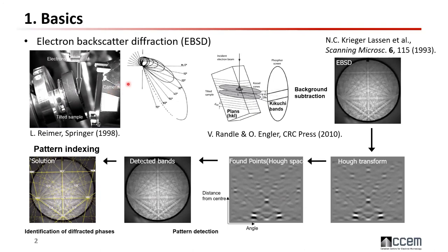The reason we tilt the sample to 70 degrees is because we want to yield a high number of backscattered electrons. Regarding the physics of EBSD: your electron beam arrives on your sample surface and is initially scattered in all directions, but only those electrons matching the Bragg diffraction condition are scattered coherently onto your EBSD camera to form the Kikuchi bands. The bands originate from the lattice planes, and all intersecting planes form this EBSD pattern.